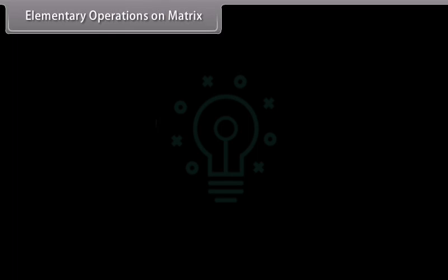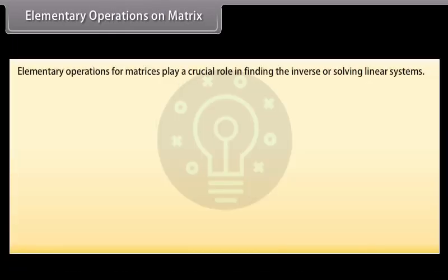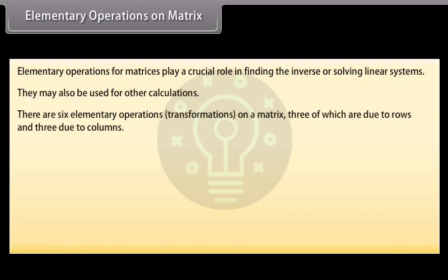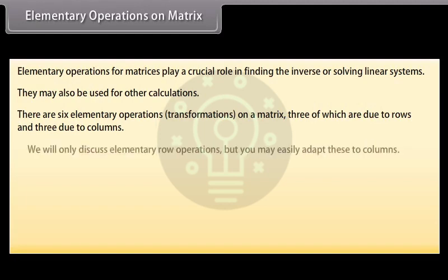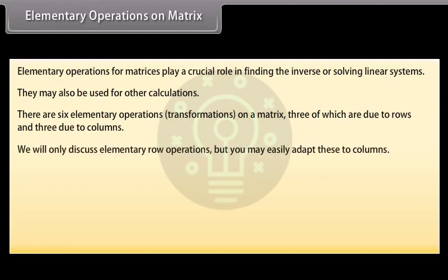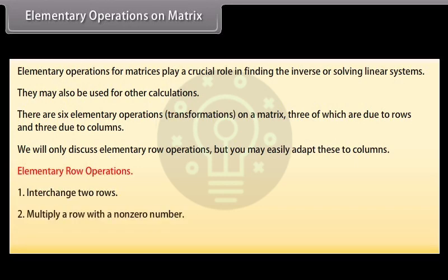Elementary operations on a matrix. Elementary operations for matrices play a crucial role in finding the inverse or solving linear systems. They may also be used for other calculations. There are 6 elementary operations or transformations on a matrix — 3 due to rows and 3 due to columns. The three elementary row operations are: interchange two rows, multiply a row with a non-zero number, and add a row to another one multiplied by a number.